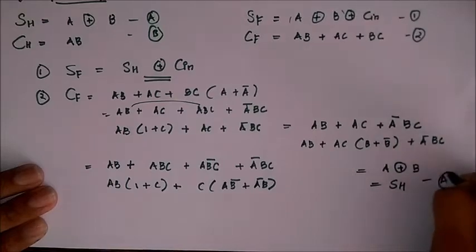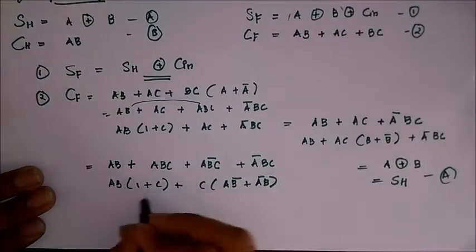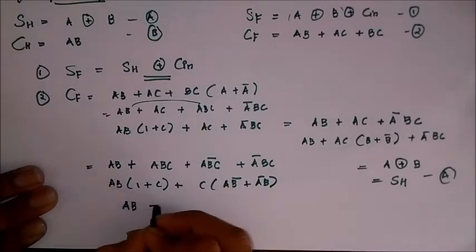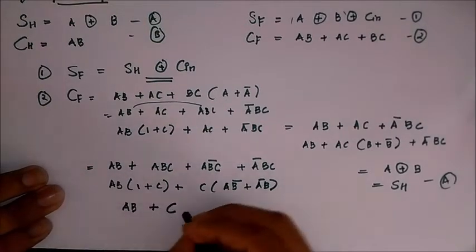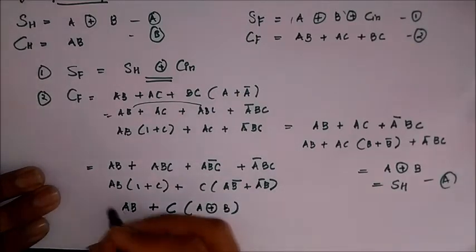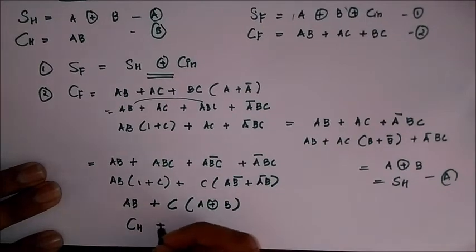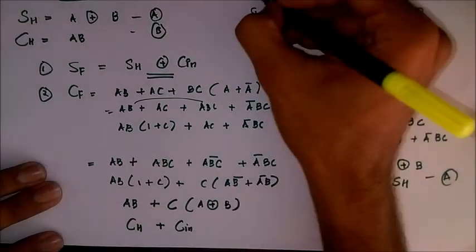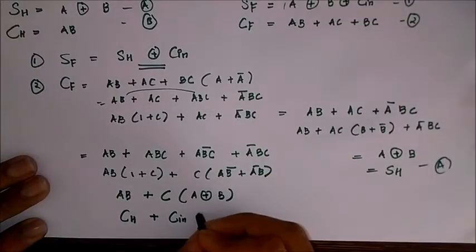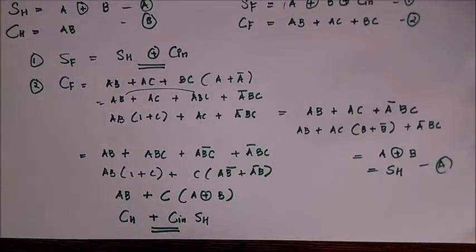Now replace, and 1 plus C is 1 as we know, so AB plus C into A XOR B. That is AB is also the carry of the half adder, so CH plus Cin, this input of the full adder, into SH.